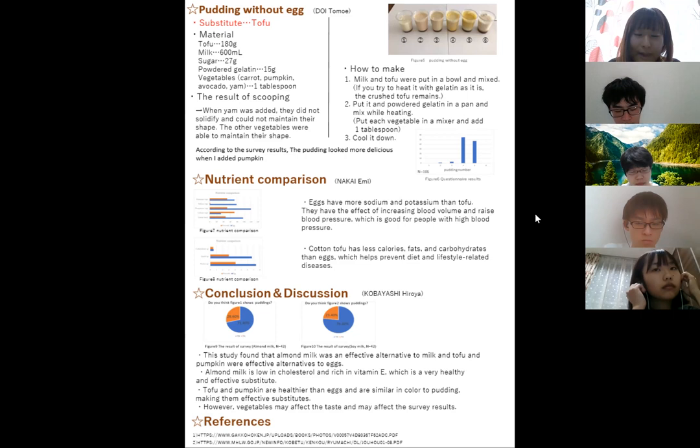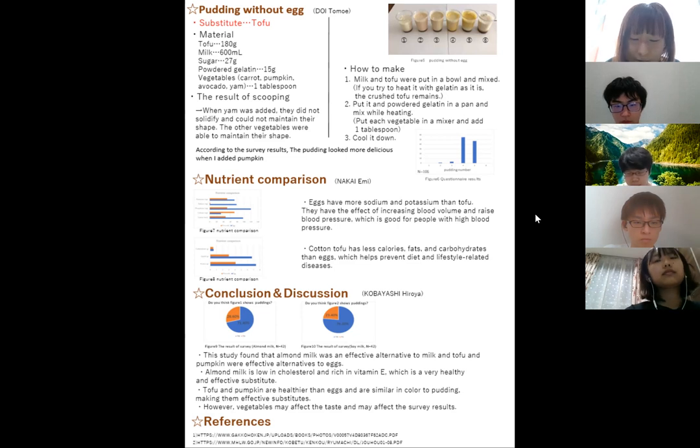Second, although they are not in the pictures, adding only avocado doesn't taste good and it doesn't look delicious because it was green. If you want to add avocado, you should add it with other vegetables. Third, the main point to make delicious pudding is to put all the vegetables in a mixer. If you put the vegetables in without mixing, the pudding will not be smooth. And I think that the sweetness of carrots and pumpkin made the pudding delicious. Look at this figure 6. I found that the pudding looks more delicious when it is colored by vegetables.